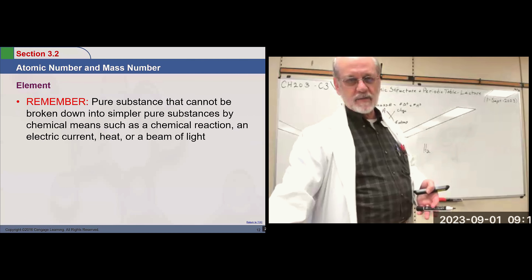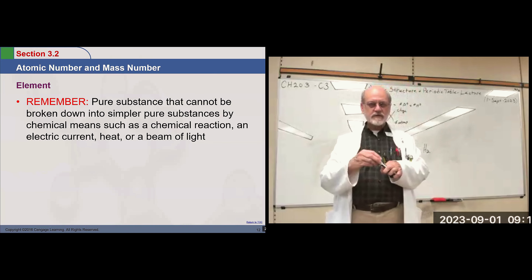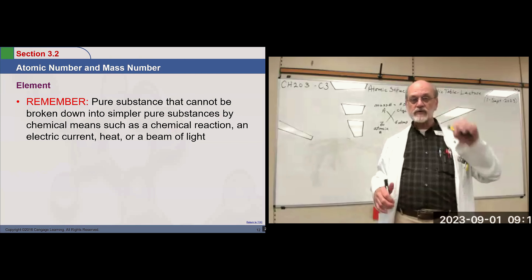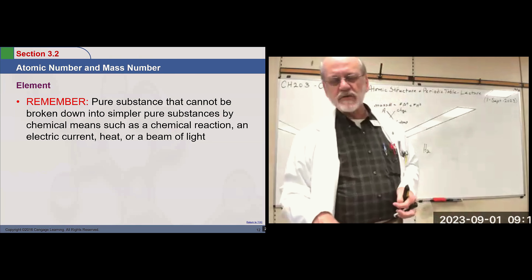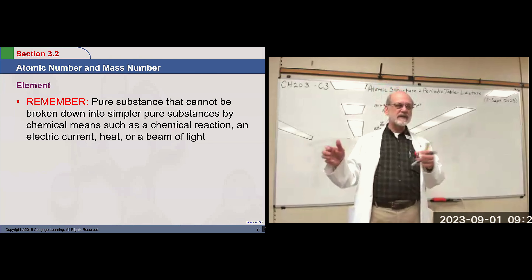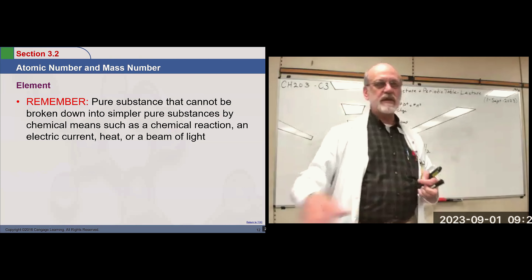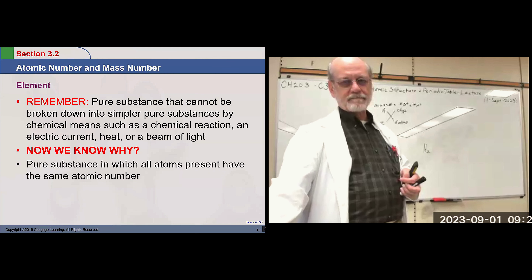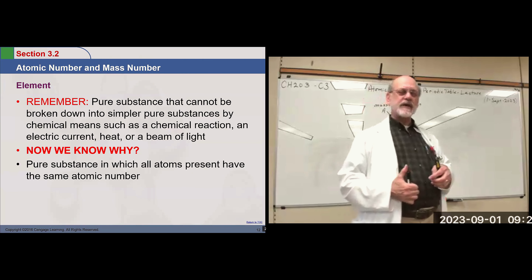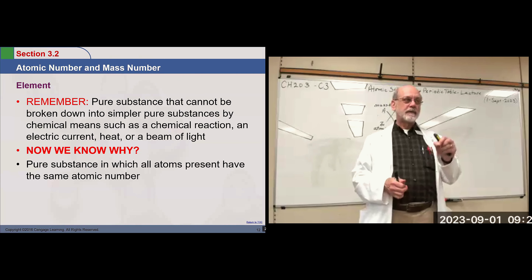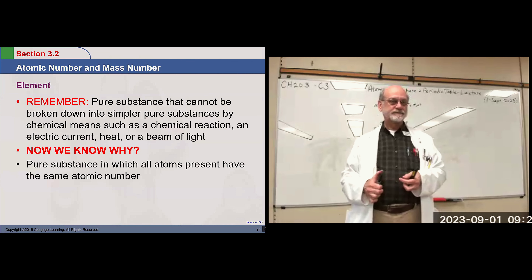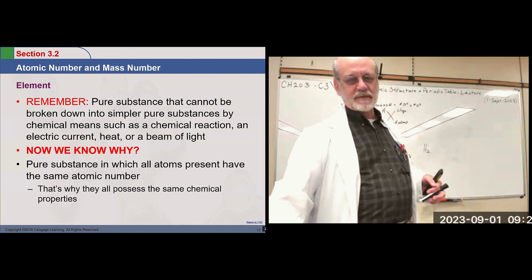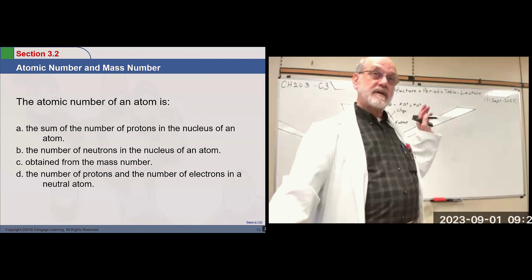An element is a pure substance that cannot be broken down into simpler pure substances by chemical means — including electricity, heat, or light — various types of anything that would break bonds. Now we know why elements are pure: they're all composed of the same atom, at least an atom with the same number of protons. We haven't gotten to isotopes yet. And they all possess the same chemical properties.